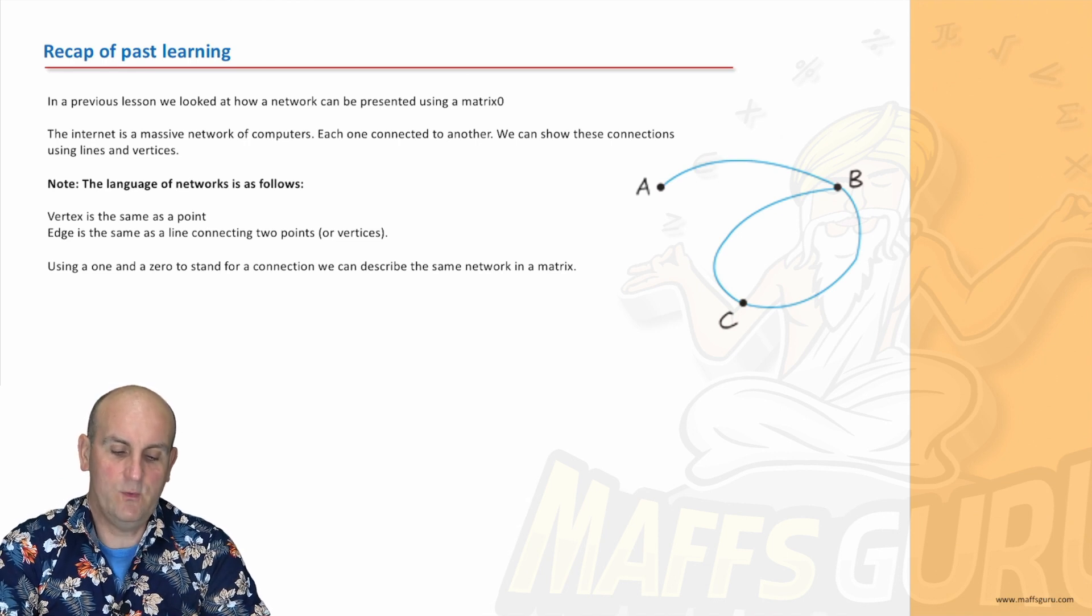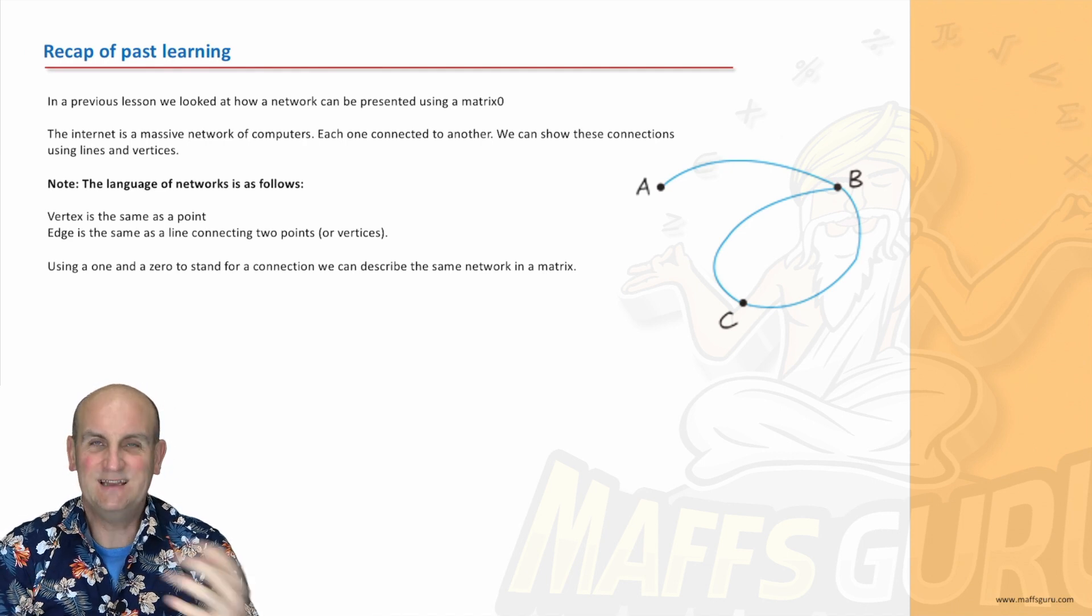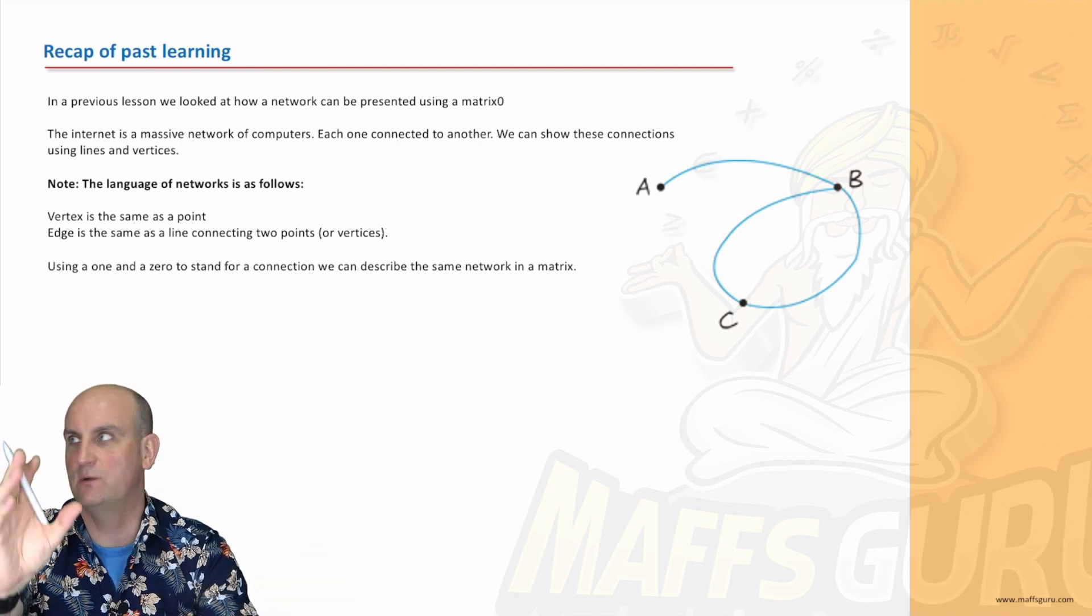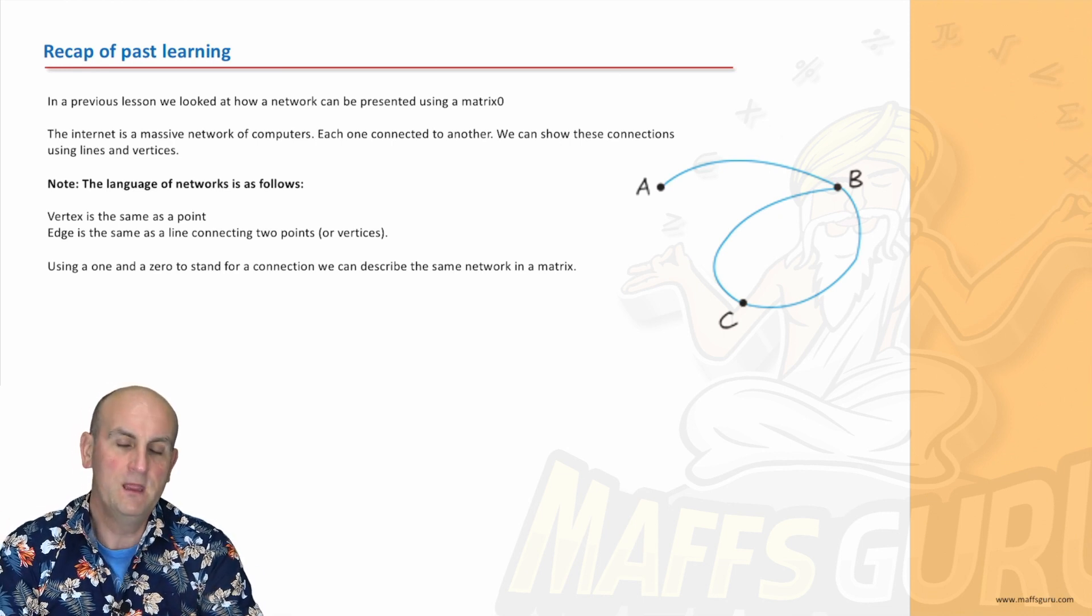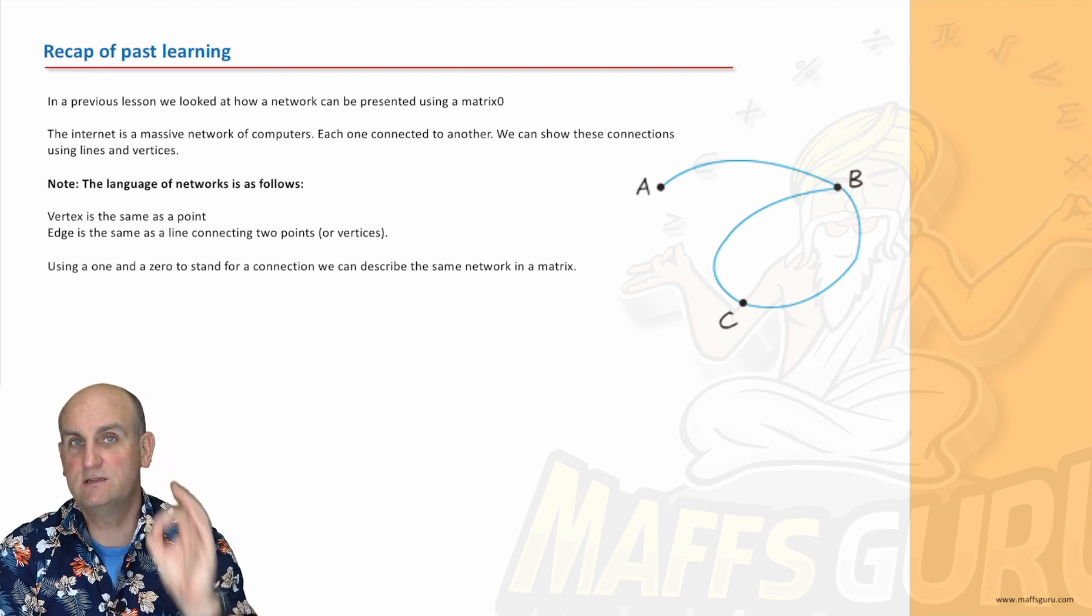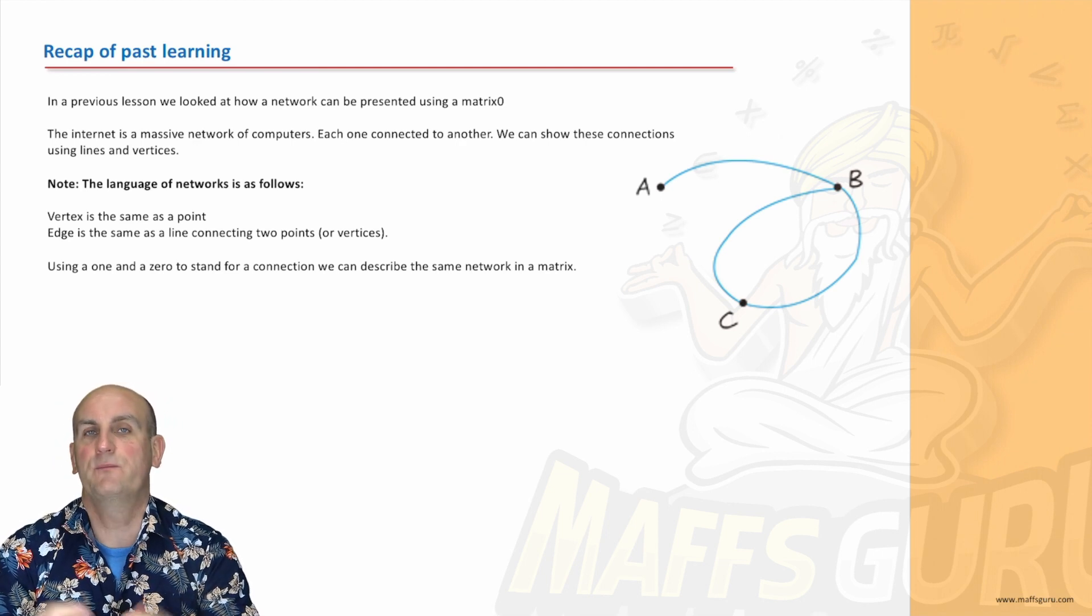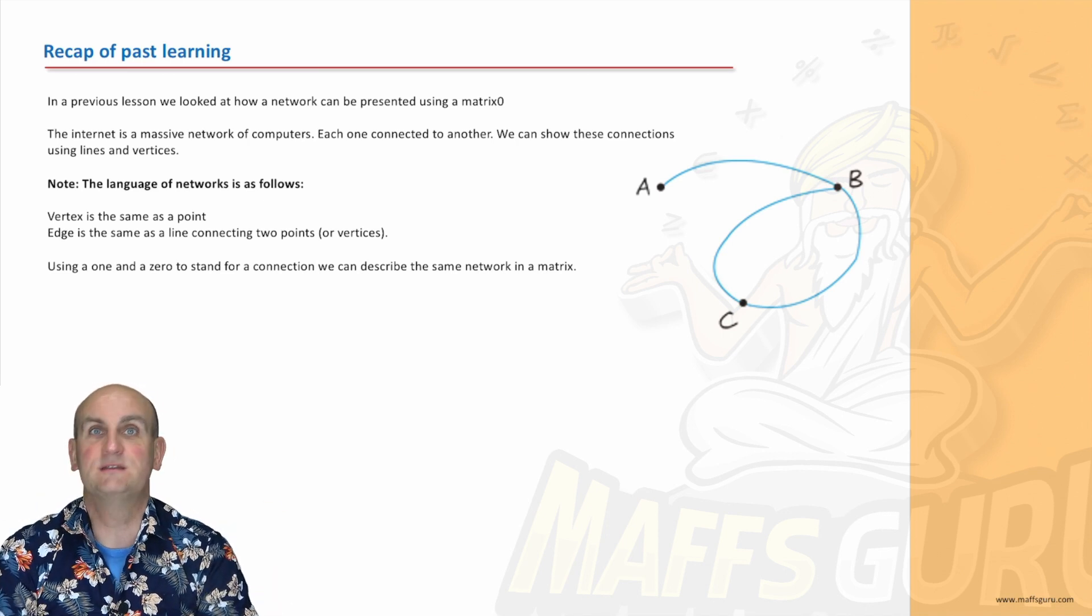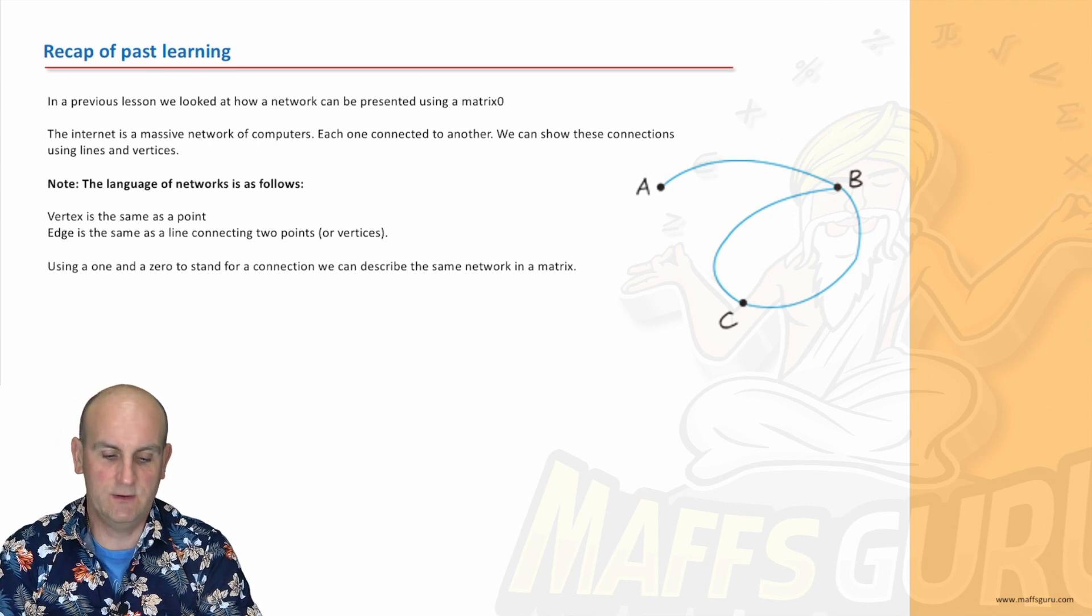In a previous lesson, we looked at how a network can be represented by a matrix. The internet is basically a massive network of computers. Your computer connects to another, to a hub, to the school, somewhere else. Just this massive network. We can show connections by dots and lines.